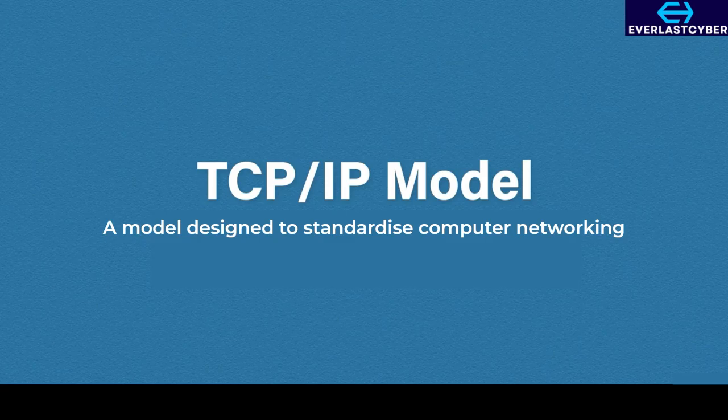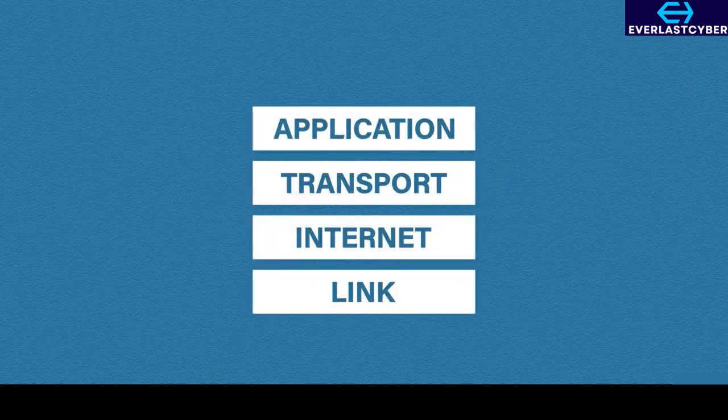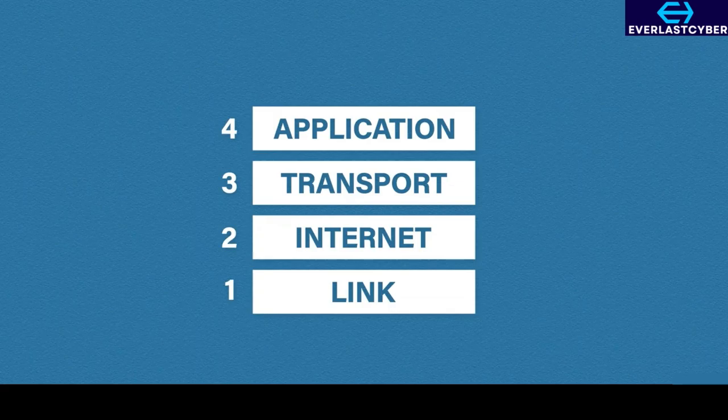The OSI model, while widely referenced, is not used in the real world. The TCP/IP model, however, is the real deal. It is made up of four simple layers, which are the application, transport, internet, and link layer. Just like the OSI model, it is numbered from the bottom to the top. The direction depends on if you are sending or receiving traffic.